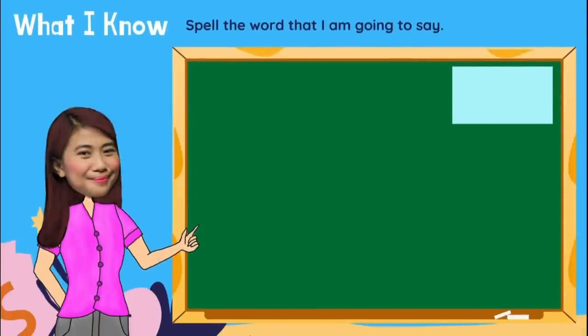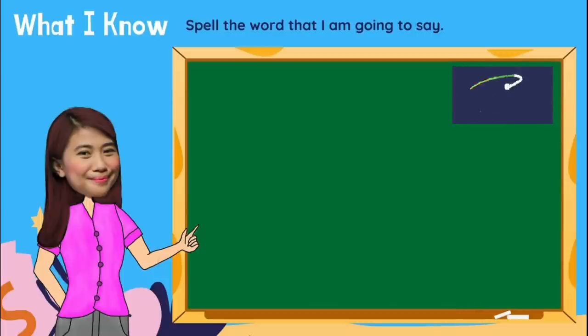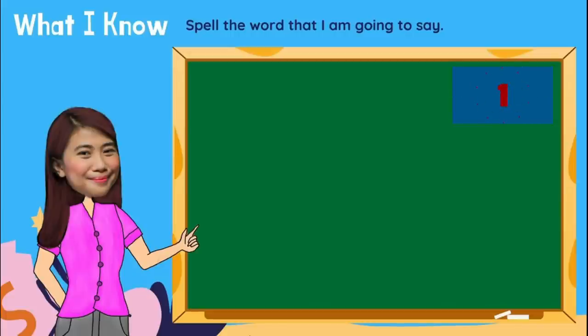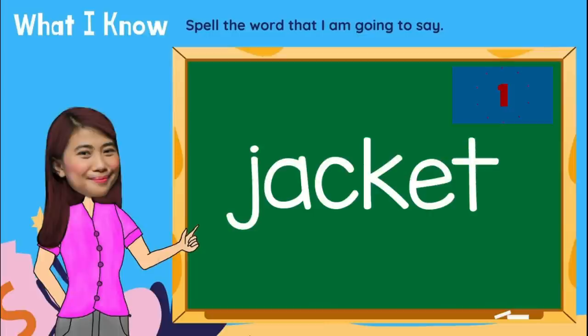Next word. Spell the word jacket. Type now your answer in the comment box. And the spelling of the word jacket is J-A-C-K-E-T. Jacket. Did you get this spelling? Wow! Very good!